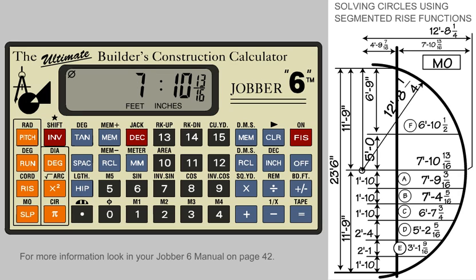Again, the MO or center line dimension is automatically displayed. Now, press the plus key. This is the rise dimension for F.